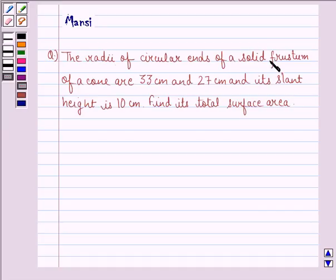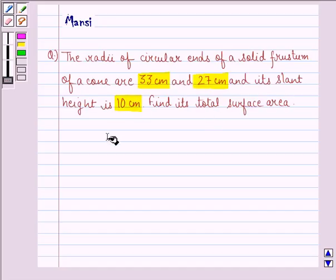the radii of circular ends of a solid frustum of a cone are 33 cm and 27 cm and its slant height is 10 cm, find its total surface area.